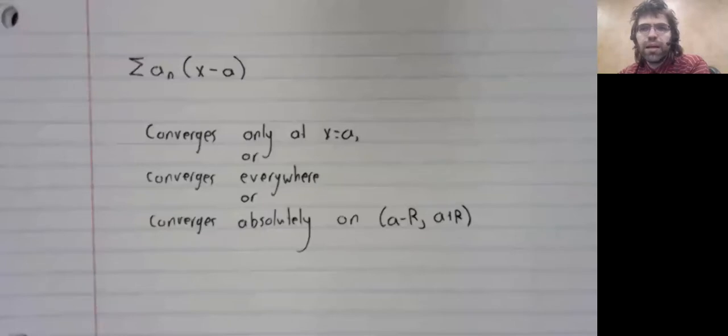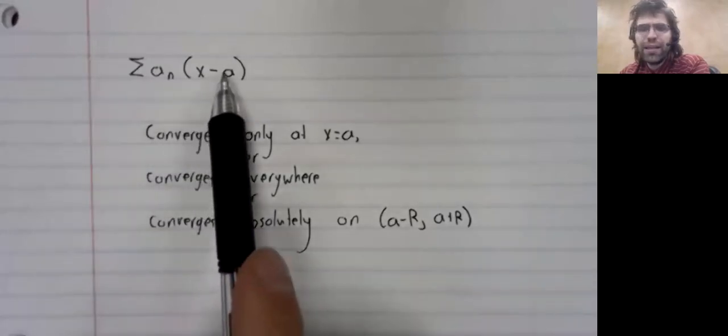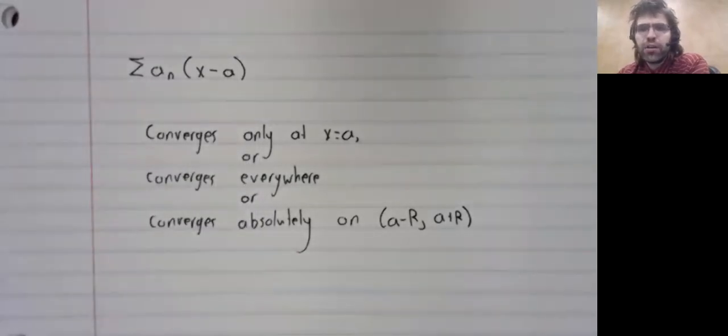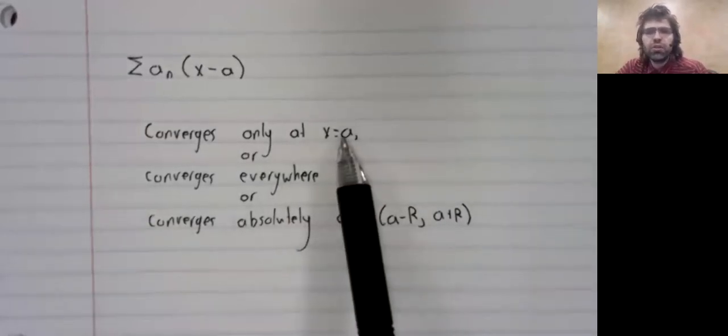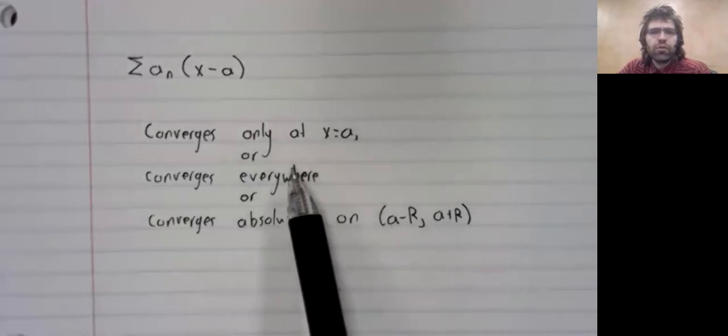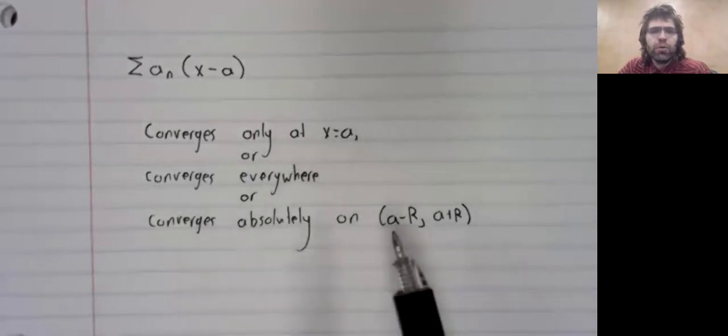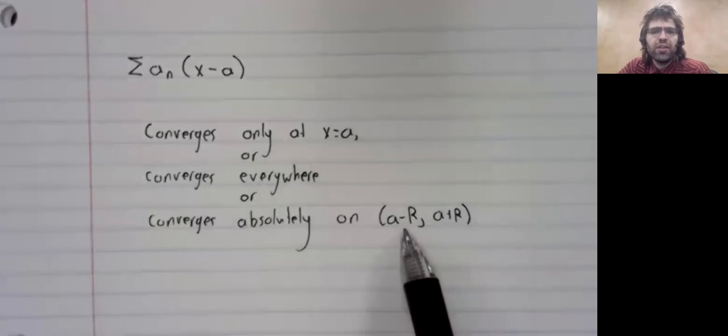If the power series is centered somewhere else around a, then there are once again three cases, and they're the same three possibilities. It might only converge at the center, or it might converge everywhere, or it might converge at an interval centered around the center.